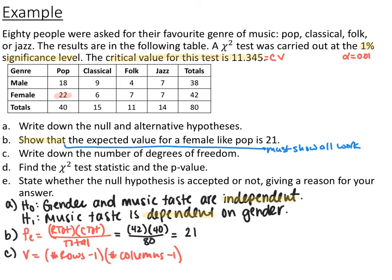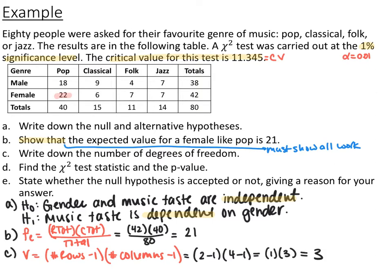Next, calculate degrees of freedom — the amount of variability in the variables. Using number of rows minus one times number of columns minus one, not including the totals row. There are two different variables for gender and four for music genre. So two minus one times four minus one equals three degrees of freedom. Your calculator will also confirm this when you run the test.